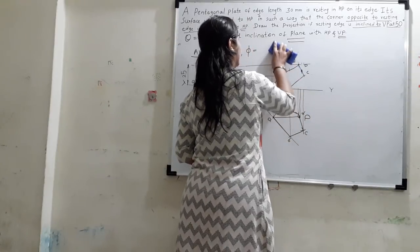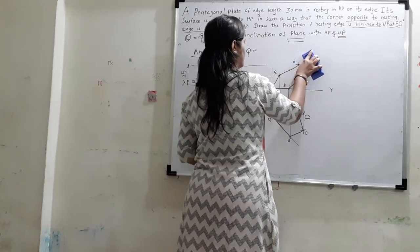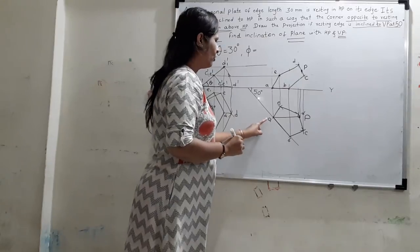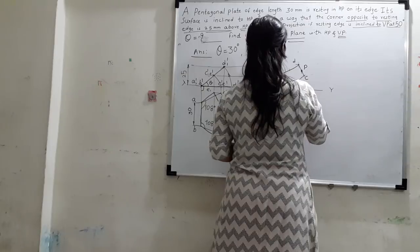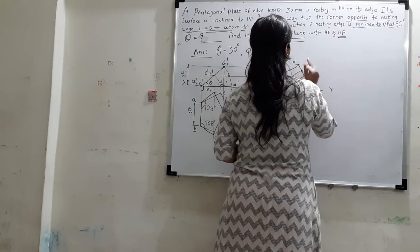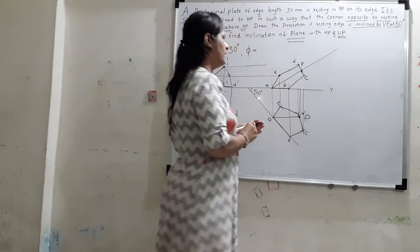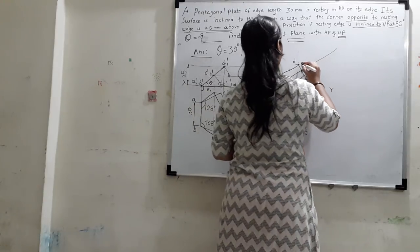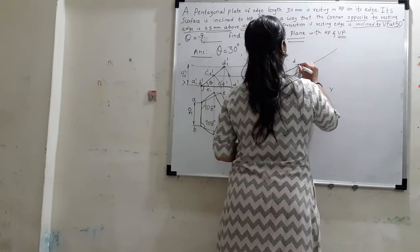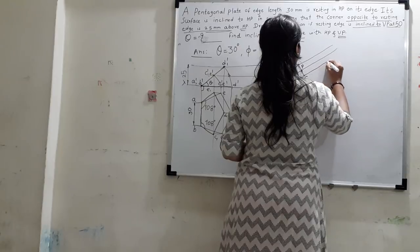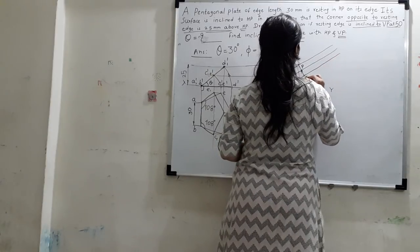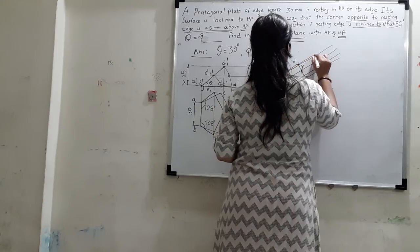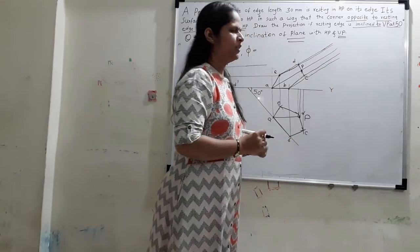This is point P and point C. We have drawn line A to P in the top view and joined A to P in the front view as well. Then from each and every point — D, C, B, and E — we draw lines parallel to line AP. This construction is done to find the inclination of the plane or surface with VP.